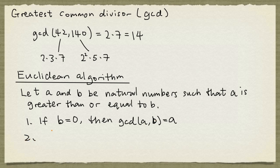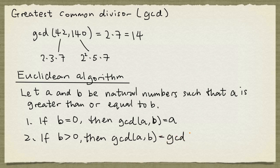Now the other observation is, if b is greater than 0, then the greatest common divisor of a and b turns out to be the same as the greatest common divisor of b and r, where r is the remainder of a divided by b.